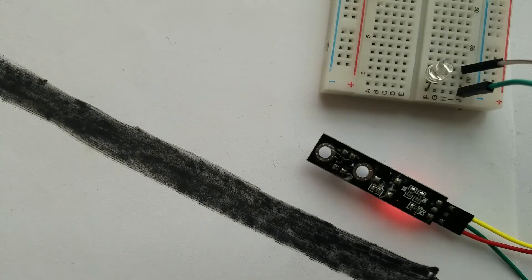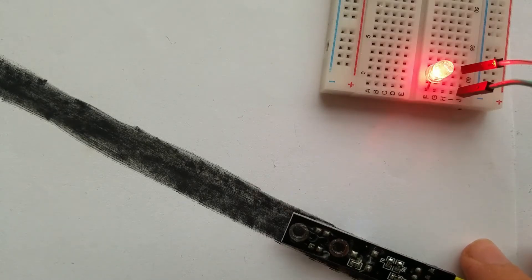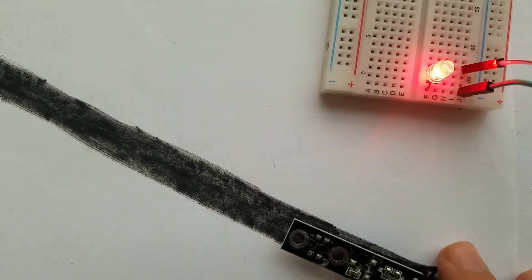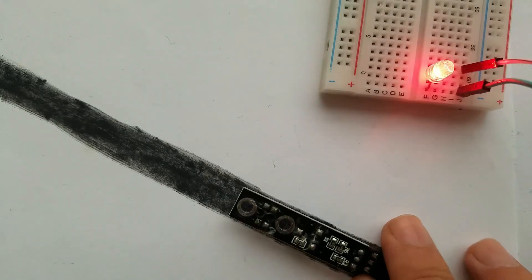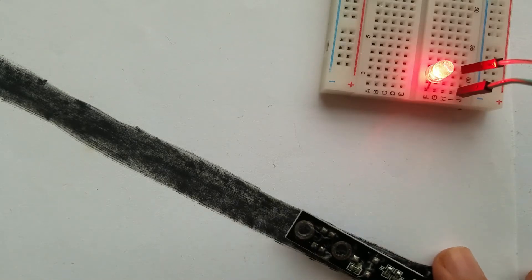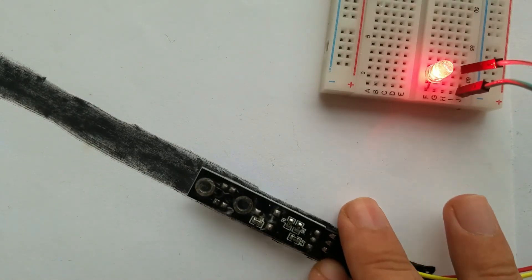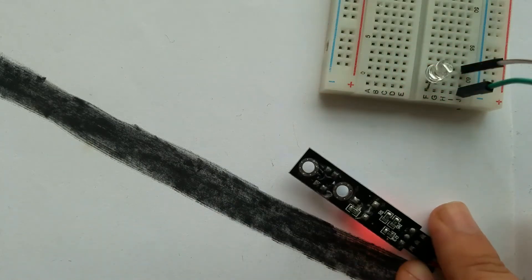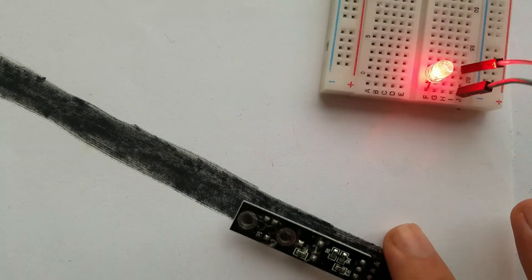This module is used to detect if the module is in line or not, and it does that by detecting the surface that the sensor is facing. As you can see, when I direct the module outside of the lane, the LED turns on to tell us that the sensor is not in the lane.